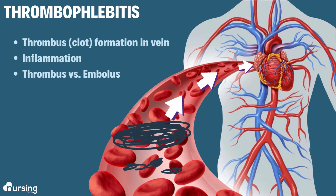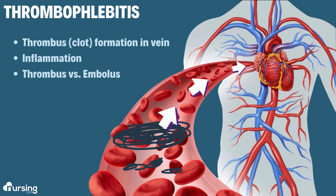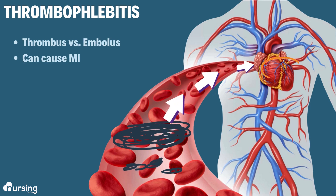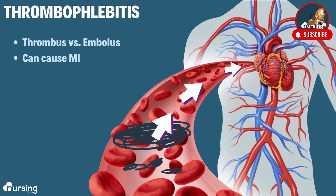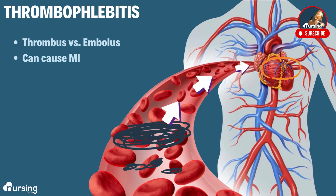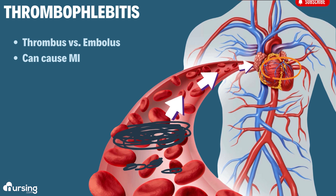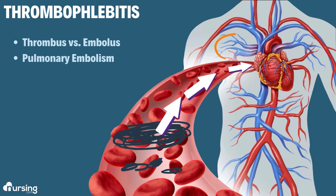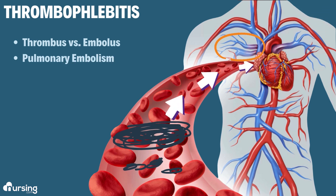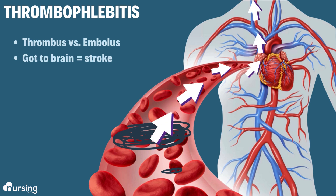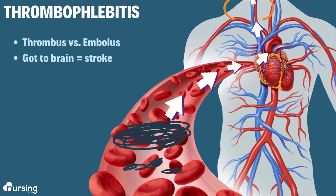What can happen is part of this clot can actually break off and travel through the circulatory system. The problem is it is heading for the heart. It could block one of the vessels causing an MI, it could block one of the pulmonary vessels causing a pulmonary embolism, or it could go up into the brain and cause a stroke.